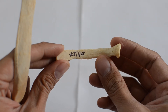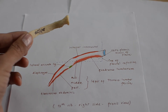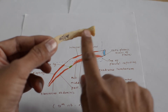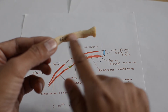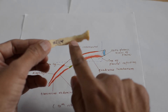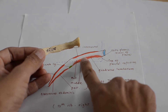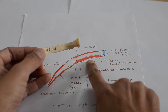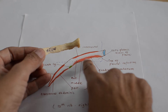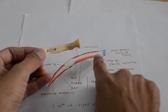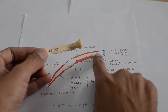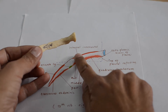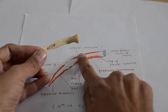Now let's understand the attachments on the 12th rib using a diagram showing the right 12th rib. In the anterior view, along the medial half of the anterior surface — which is smooth and concave — there is attachment of quadratus lumborum with the anterior and middle layer of the thoracolumbar fascia. Along the medial half there is also pleural reflection, and above it is the costodiaphragmatic recess.